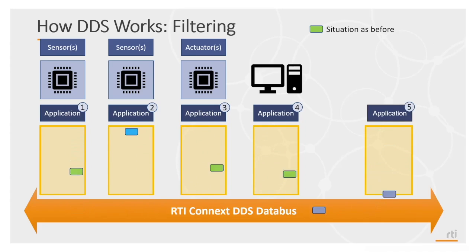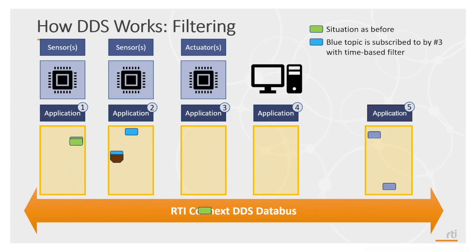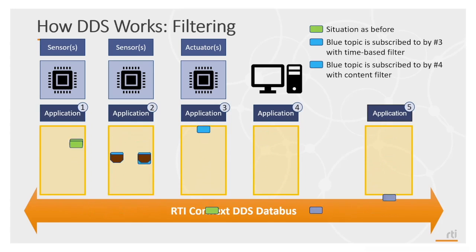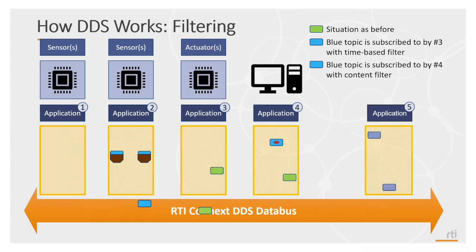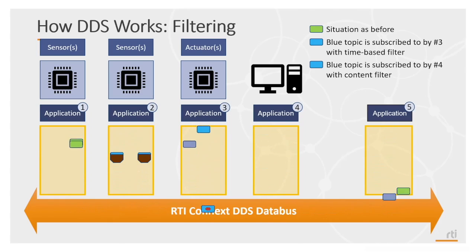We can also do filtering in the communications layer. This helps move logic that was normally in the application layer down, so that you can focus on the application itself and not how the data gets to your application. In this case, application 2 is publishing data on the blue topic, but application 3 and application 4 need the data in different ways. We're using a time-based filter for application 3, because the actuator is running a control loop that only requires data at a very specific rate — the rate of the control loop — so there's no need to bring it in any quicker.